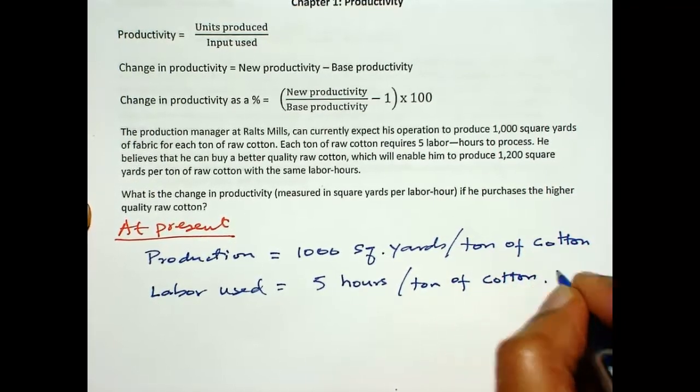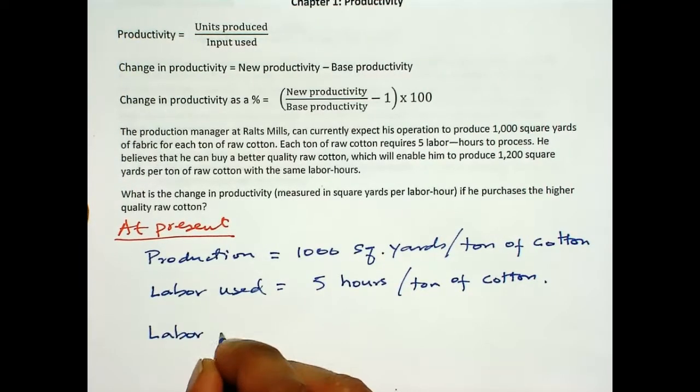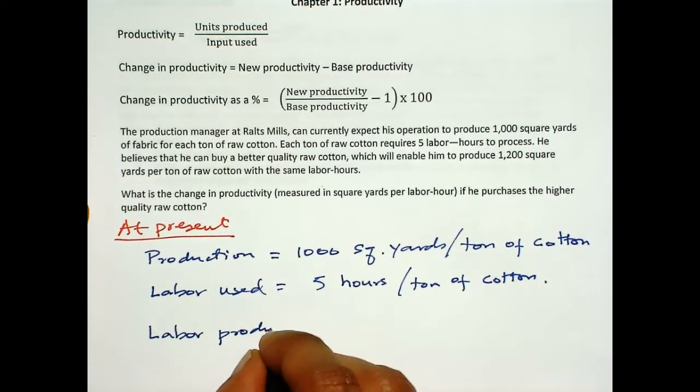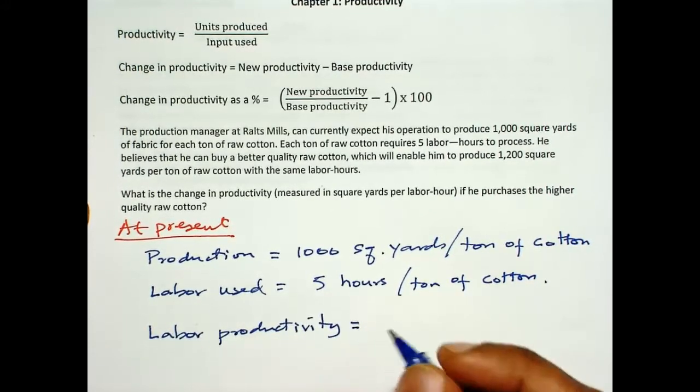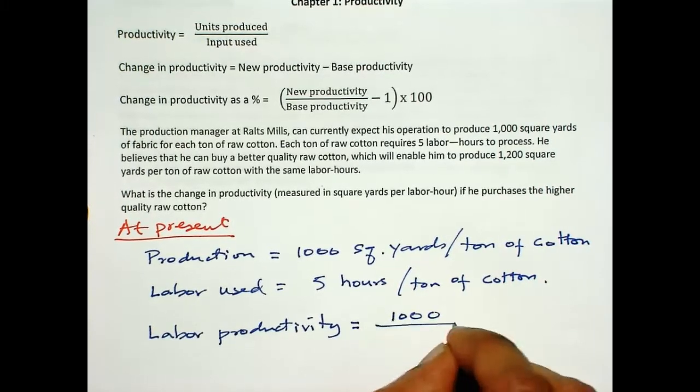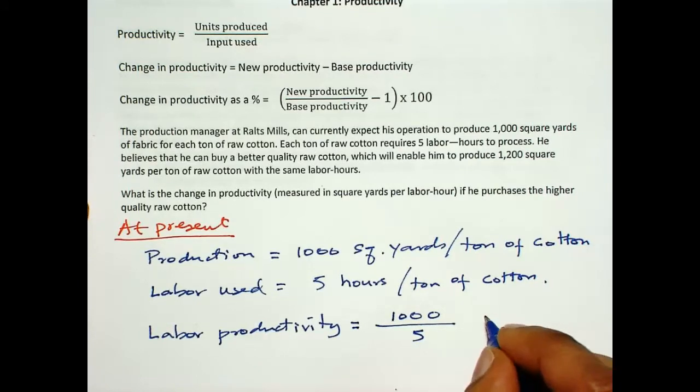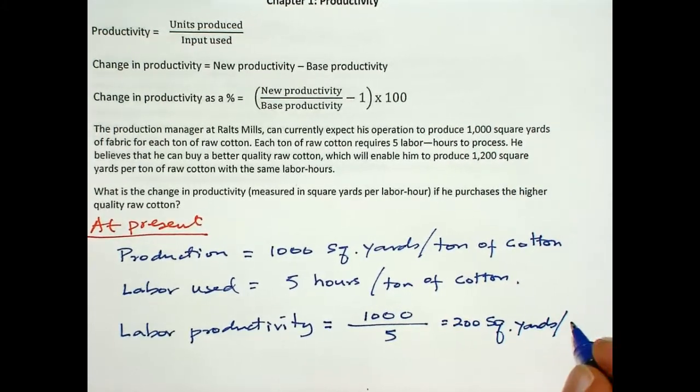Then, labor productivity is output, which is 1000 square yards, divided by labor used, which is 5. That is 200 square yards per hour.